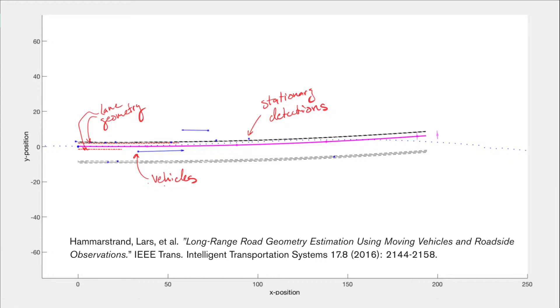So, how can we use this to estimate the geometry of the road? Well, the lane markings coming from the camera is directly related to the shape of the road, right? But in best case, it's only valid up to roughly 50-60 meters, which is not enough.